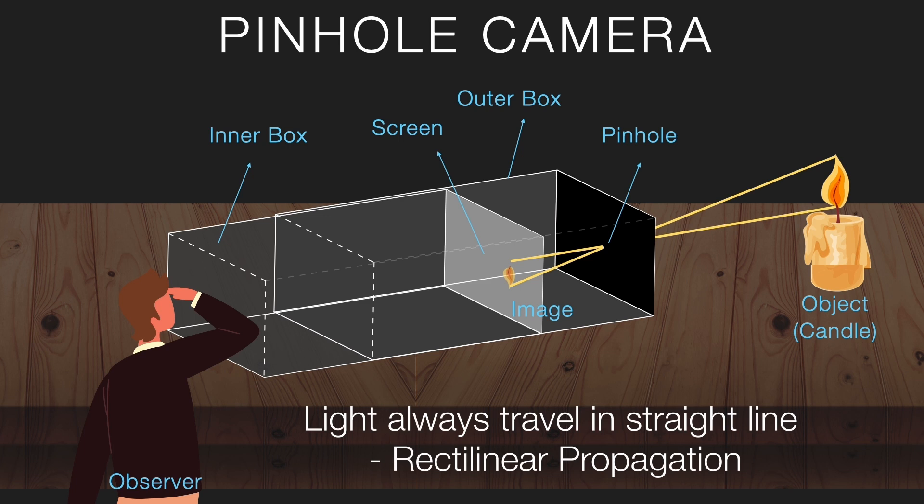Notice there are no lenses here. Unlike a normal camera—you've seen mobile cameras, DSLR cameras, different types of cameras—they all have lenses. But the pinhole camera only depends on the tiny hole to guide the light. Simple, but it does the job.